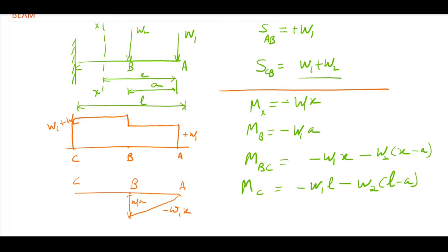In the case of point loads, the shear force variation is constant throughout each span between two loads, while the bending moment varies linearly.